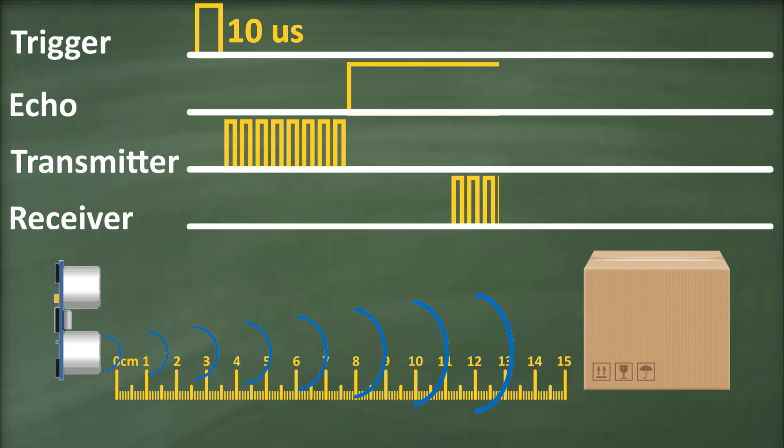If the pulses are reflected back, the echo pin goes low upon receiving the signal. This generates a pulse on the echo pin, whose width determines the time taken to receive the echoed signal.